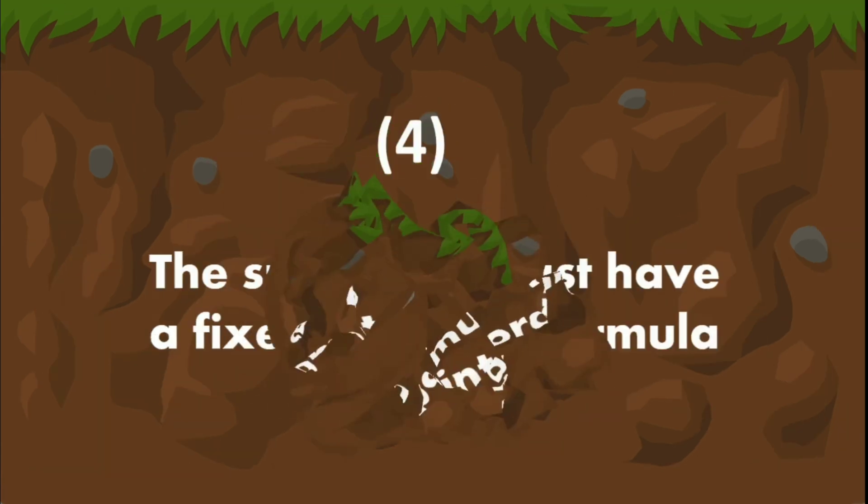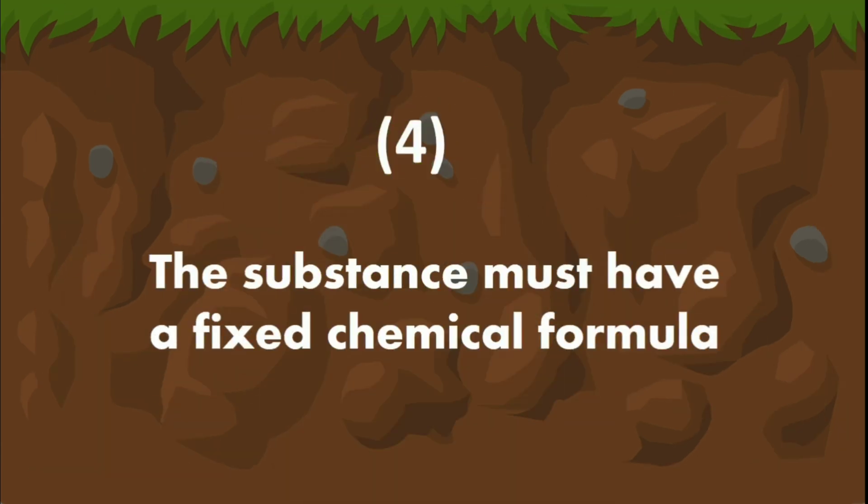The fourth point is that the substance must have a fixed chemical formula, meaning they must possess a specific combination of elements.